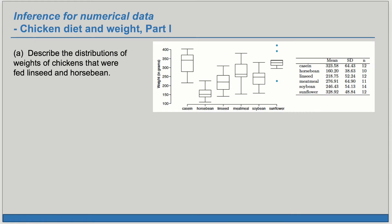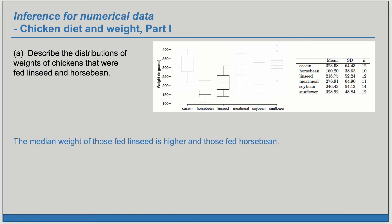Part A: Describe the distributions of weights of chickens that were fed linseed and horse bean. So let's look at the box plots that correspond to those two — linseed and horse bean. What we can note first is that the median weight of those fed linseed is higher than those fed horse bean. We're going to want to look at center, spread, and shape.